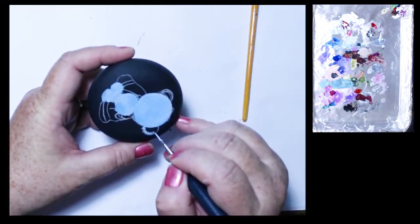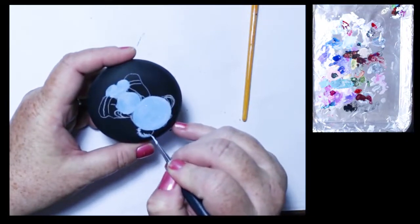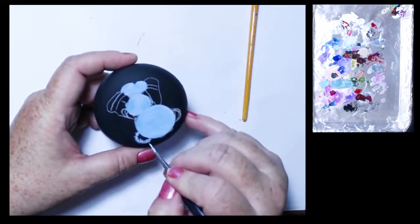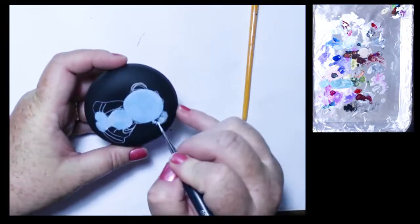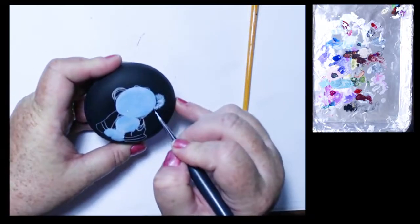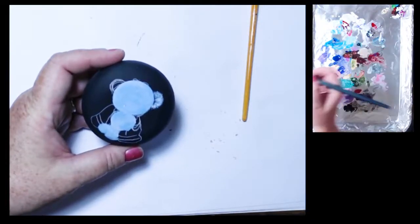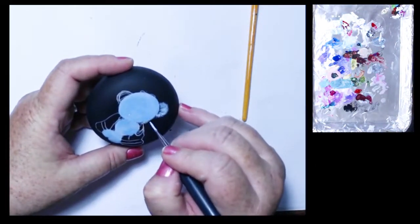You notice like I didn't do fur around the body and the feet, but around the ears I'm indicating the fur. Since the ears are so small instead of just blocking them in I'm going to go ahead and do the fur and it's basically just a bunch of little lines.